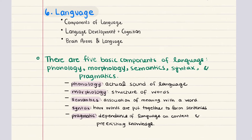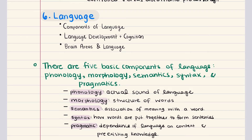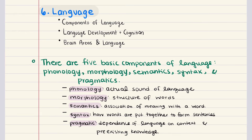Our last and final objective is Language. Whether written, spoken, or signed, language is fundamental to the creation of communities. There are five basic components of language: phonology (the actual sound of language), morphology (the structure of words), semantics (the association of meaning with a word), syntax (how words are put together to form sentences), and pragmatics (the dependence of language on context and pre-existing knowledge). An important precursor to language development is babbling. Almost without exception, children — including deaf children — spontaneously begin to babble during their first year. For hearing children, babbling reaches its highest frequency between 9 and 12 months. For the most part, language is substantially mastered by the age of five.